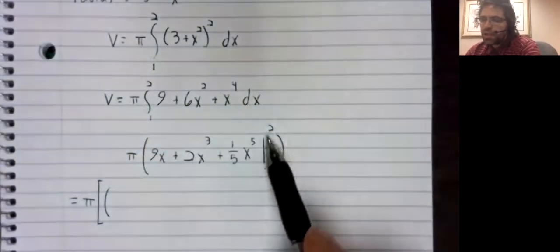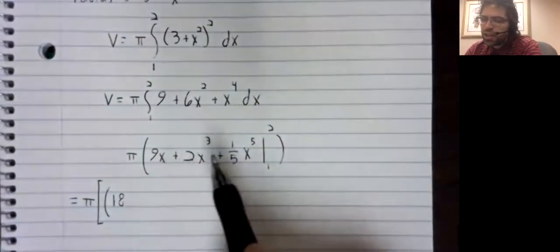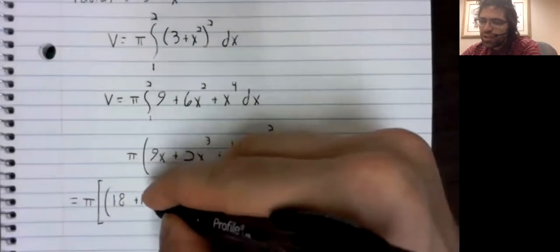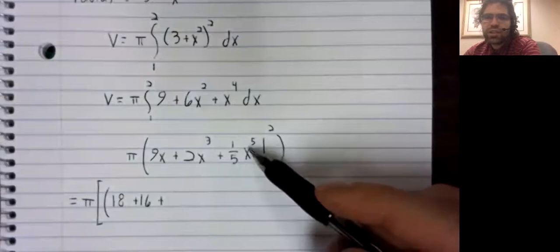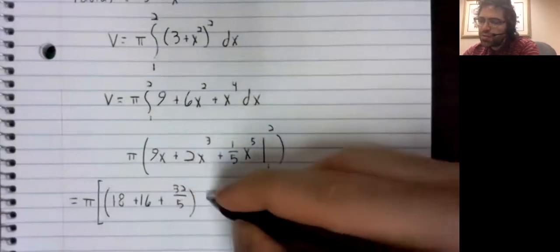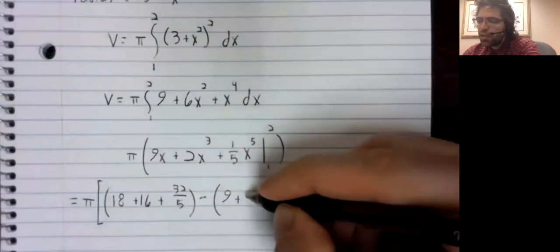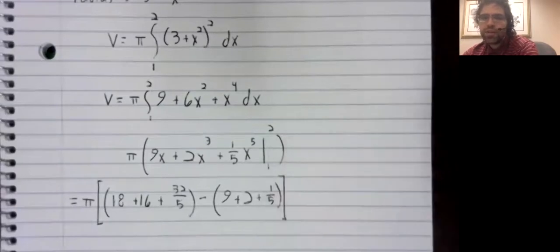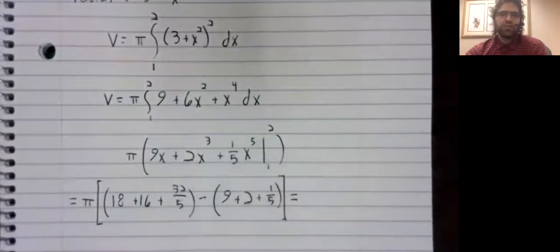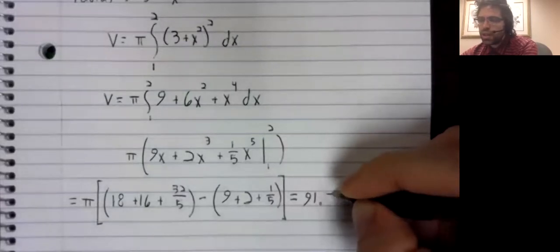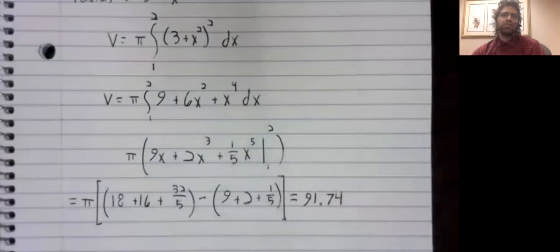Evaluated from one to two. And now we plug in two. Let's see. Nine times two, 18. Two cubed is eight plus two is six, 16. 32 fifths. Minus nine plus two plus one fifth. And if we stick all of this into a calculator, we wind up with 91.274.